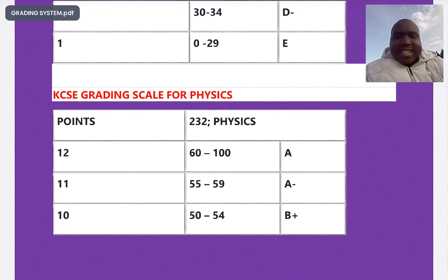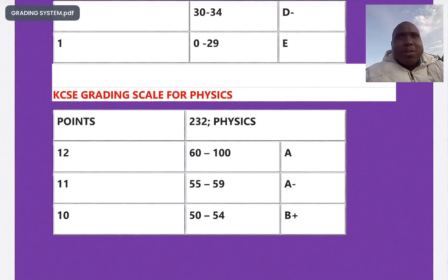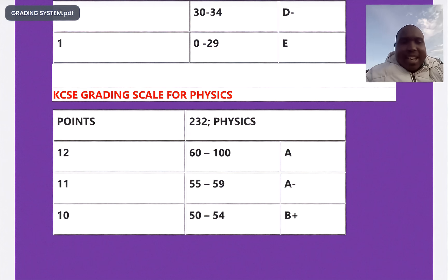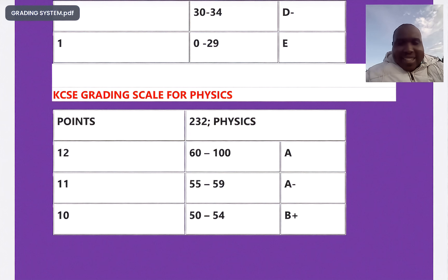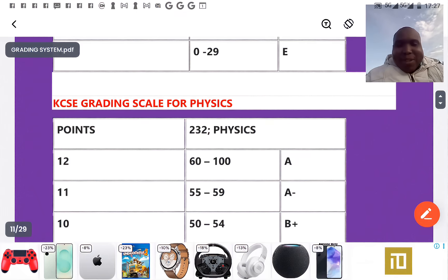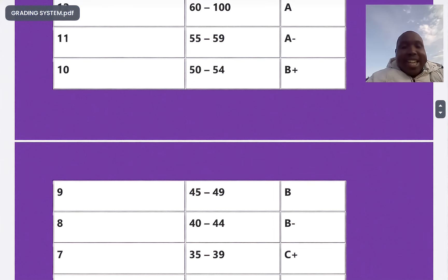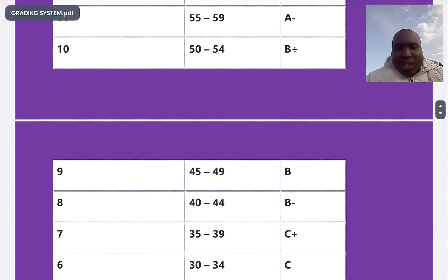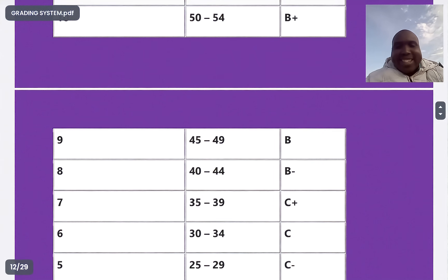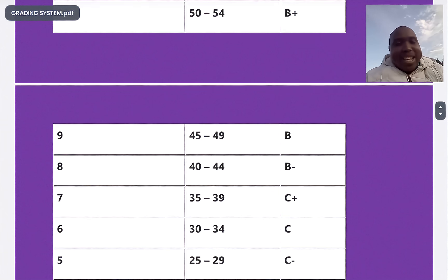Physics is one of the best graded subjects. Anybody who scores 60 and above gets an A. 55 to 59 is A minus, 50 to 54 is B plus, 45 to 49 is B plain, 40 to 44 is B minus. Anybody who scores 35 to 39 gets a C plus.